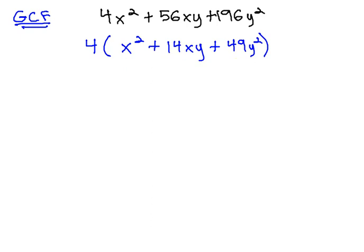When there's 3 terms, we start factoring using the AC method. Here, we multiply to 1 times 49, or 49, and add to the middle number, which is 14.